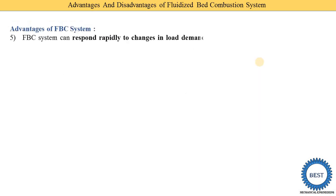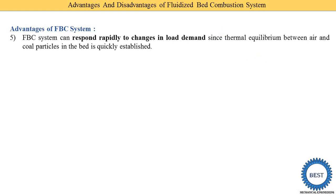The fifth advantage is that the FBC system can respond rapidly to changes in load demand, since thermal equilibrium between air and coal particles in the bed is quickly established. When the load on the turbine increases, more steam is required, and more fuel must be supplied. The FBC system gives a quick response and adapts according to the load demand.